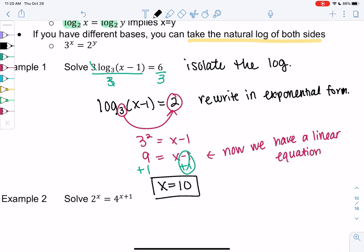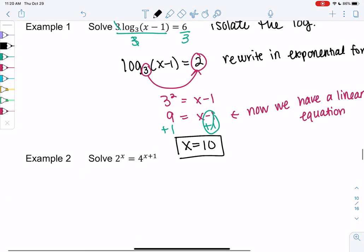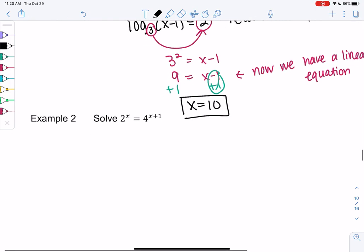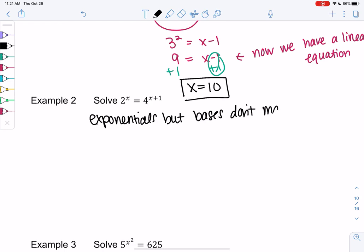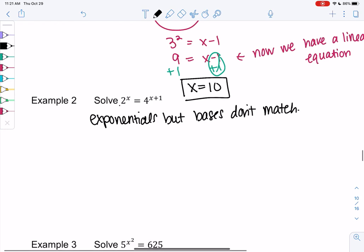Should we try example 2? So I notice I have exponentials on both sides but the bases don't match. So 2^x = 4^(x+1). 2 is a base and 4 is a base. They're not quite the same base. But I think I can make the bases match.